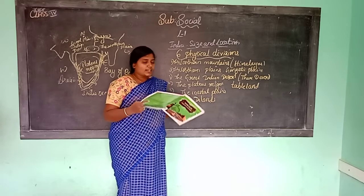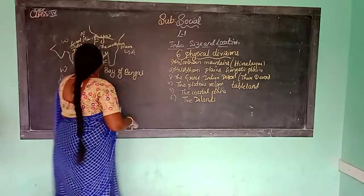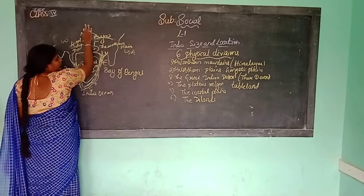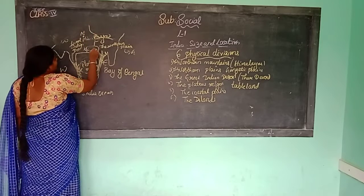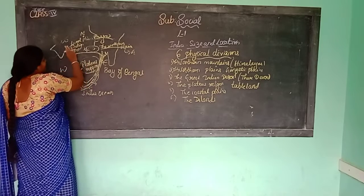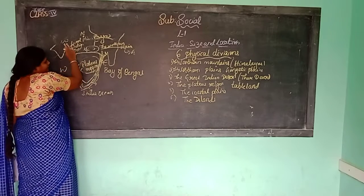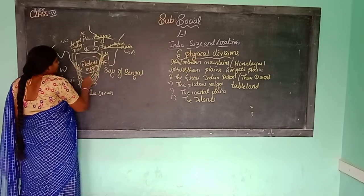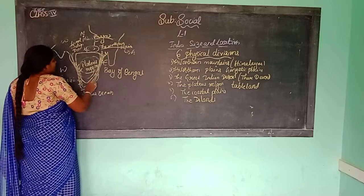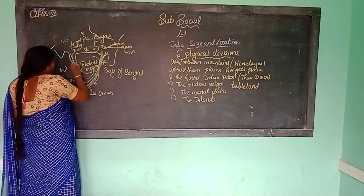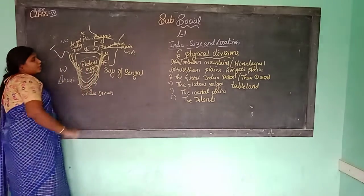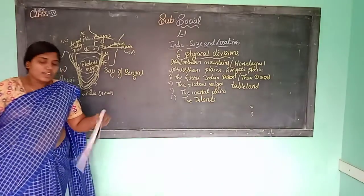The six physical divisions are: Northern Mountains in the north, Northern Plains to the south of the Himalayas, the Great Indian Desert on the western side, the Plateau in the middle southern part, Coastal Plains on the western and eastern sides, and the Islands shown in white.